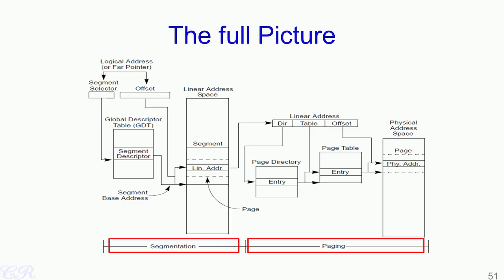This particular slide shows the full address translation in an x86 system. The CPU puts out a logical address comprising a segment selector and an offset. The segment selector is an index into the global descriptor table into a segment descriptor. The segment descriptor along with the offset creates what is known as the linear address, and this entire space is the linear address map for the process. The linear address comprises three components: the directory entry, the table index, and the offset. The directory entry indexes into the page directory, whose contents select a page table. The table index gives an offset within that page table, and the contents along with the final 12 bits of the linear address are used to obtain the final physical address for reading or writing data to RAM.